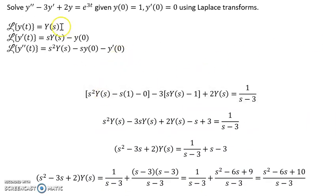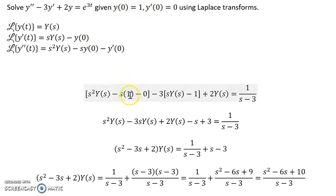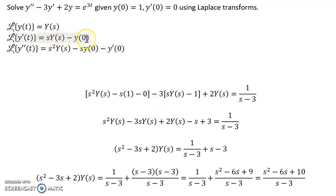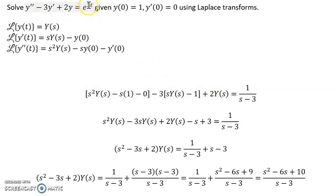Going back to our beginning problem, we need to convert this differential equation and Laplace transform the whole thing. Our y'' is going to become s² Y(s), then s times y(0) — but y(0) is given to be 1 — and then minus y'(0), which is 0. Then minus 3y', so minus 3 times that expression, again with y(0) equal to 1. Then plus 2y, so the transform of that is just 2Y(s). And e^(3t) becomes 1 over (s minus 3) using our exponential rule.